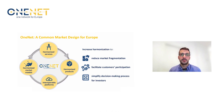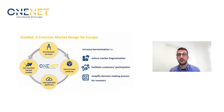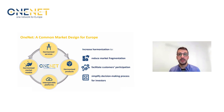One of the OneNet project objectives is the definition of a common market design for Europe. To reach this goal, the OneNet project acts on four different dimensions: the definition of harmonized system services to satisfy the different operational needs of the system operators, the definition of harmonized products related to those system services, the design of harmonized market models that allow the effective trade of the harmonized products among market participants, and the design and implementation of interoperable platforms that allow the marketplaces to operate. In this session, we will mainly focus on the design of harmonized market models.